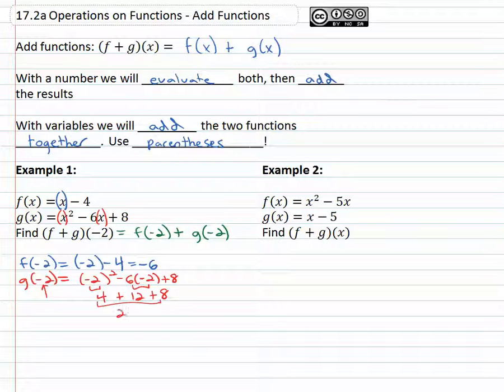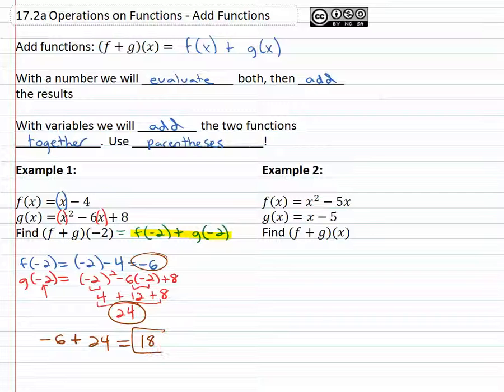And going back to what we were asked to do, we're asked to add those results together. Take -6 from the f and add the 24 from the g to get our result of 18. (f+g)(-2) = 18.